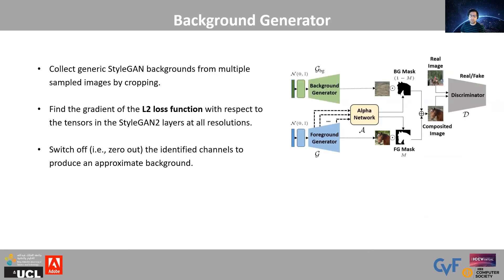We derive the background generator by collecting some crops of the backgrounds in the StyleGAN — for example, random cropping the top right and top left corners. Then we use an L2 loss function between the generated StyleGAN images and the backgrounds to determine the active tensors for background generation. Finally, we zero out the inactive layers.